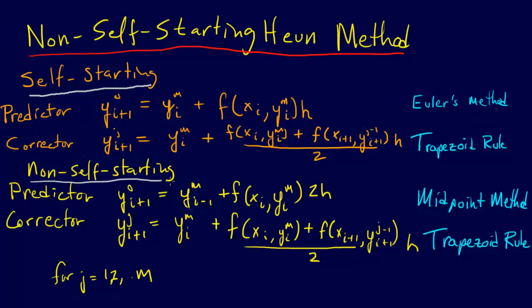Now, the non-self-starting Heun method, the big difference here is look at this term right here. This term is y_i, right here, this term is y_i-1. So what we're doing is we're using a point before, so this is a point that we didn't even have, so we're going to need both y_i and y_i-1. That's why it's called non-self-starting is because this is information we may not traditionally have. We have y_i, but we may not have y_i-1. Now, once we get started, we'll have it, but we may not have it a priori, which is why it's called non-self-starting.